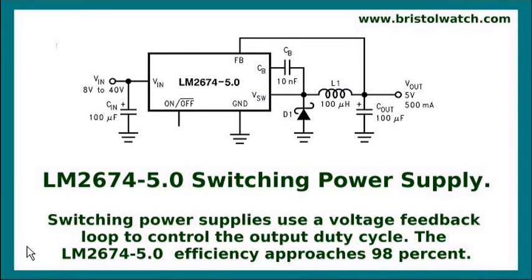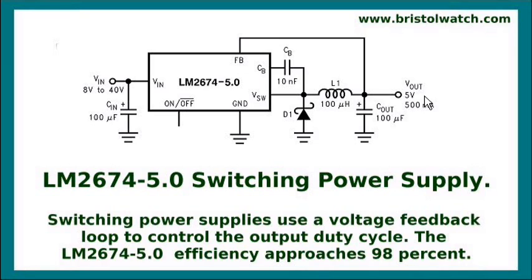This is often used in switching power supplies such as the LM2674. It usually has some kind of feedback loop that controls the pulse width modulation duty cycle. If I'm drawing a lot of current and the voltage starts to drop, it will increase the duty cycle to increase the energy transfer, and vice versa.